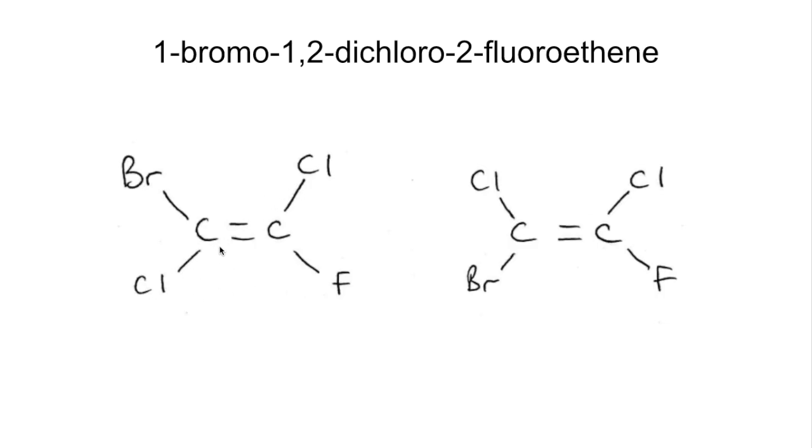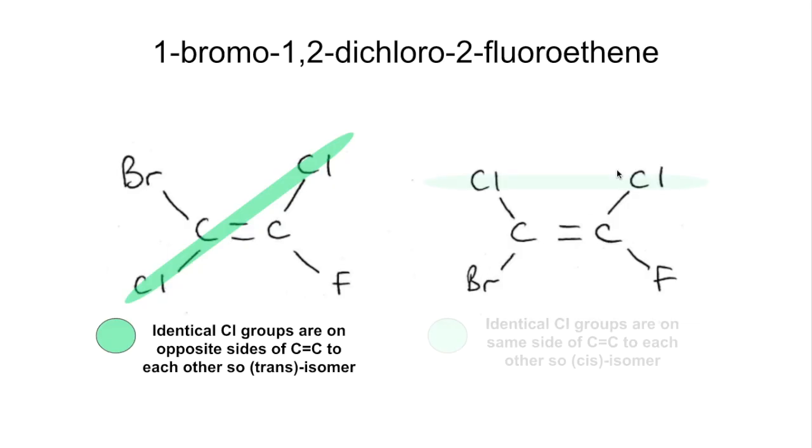You can see with the cursor there, they are diagonally opposite each other. So this one is going to be trans. In this one, the identical groups are on the same side of the double bond, and so this one is cis.